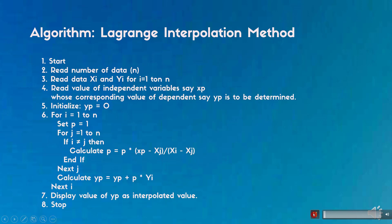After the compiler completes compiling, the program is started. It reads the input and stores them in their corresponding variable address. It reads number of data n, and then data xi and yi for i equals 1 to n. It reads value of independent variable xp whose corresponding interpolation value yp is to be determined.